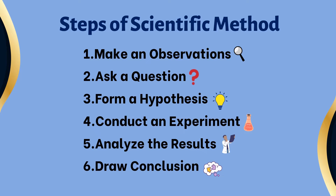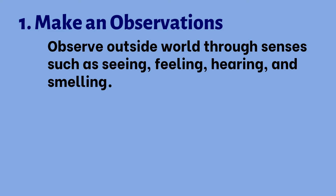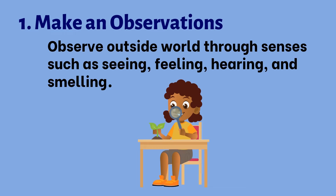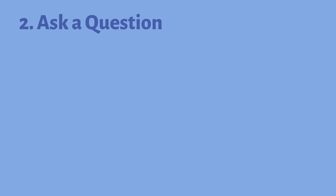The first step of Scientific Method is Making an Observation. Scientists observe the outside world through their senses such as seeing, feeling, hearing, and smelling. For example, Betty sees the tomato plants grow slowly — what she is doing is observing.